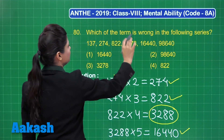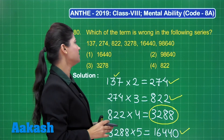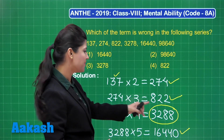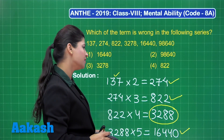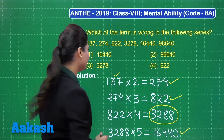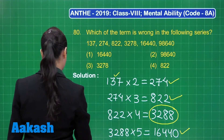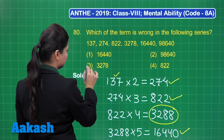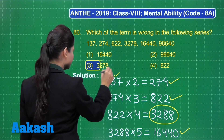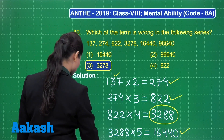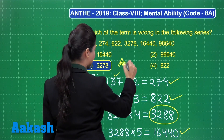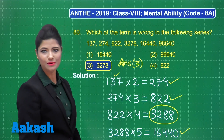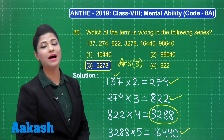The incorrect term is at that position — it is mentioned as 3,278 in the sequence, but it should be 3,288. So the incorrect term in this series is 3,278. You can mark the answer as option 3. I hope that is clear.